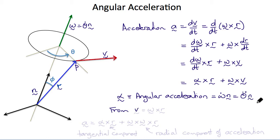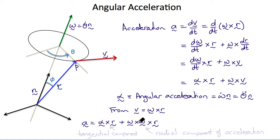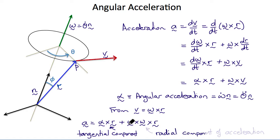Making use of v equals omega cross r, that gives us that a equals alpha cross r, and substituting omega cross r, we get omega cross omega cross r. Looking at the direction of this vector, we can see that the first term is the tangential component of a, and that the second term is the radial component of the acceleration.